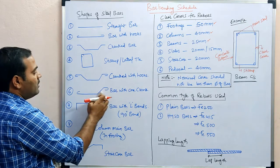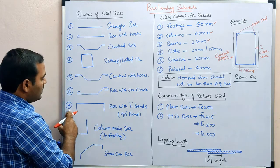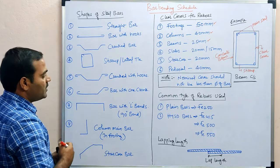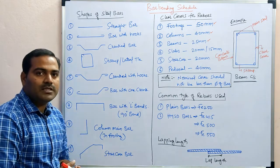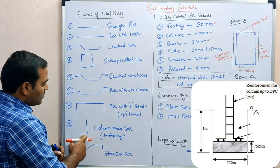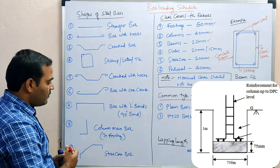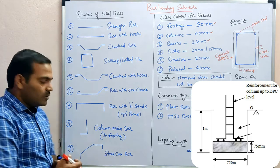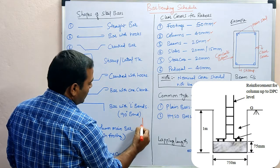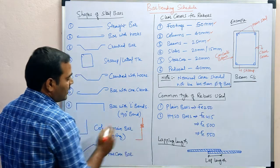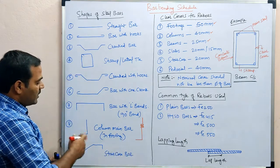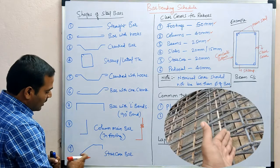The next one is a cranked bar provided only on one side — the crank is on one side only. After that is a 90-degree bend bar, which is like a U-shaped bar, and we come across this in footings as well as beams. The next one is an L-shaped bar, provided in footings and columns.